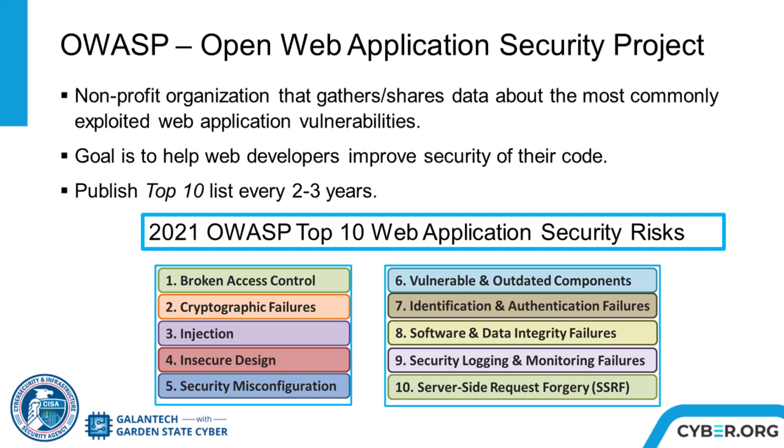There is a top 10 list published every two or three years. The OWASP Top 10 provides rankings of and remediation guidance for the top 10 most critical web application security risks. The most common list is from 2021.